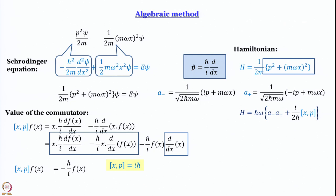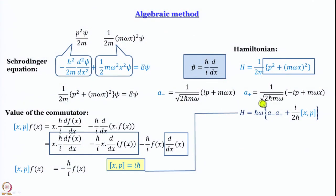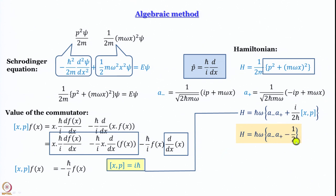Now we take [x, p] = iℏ and plug it into the expression for the Hamiltonian: H = ℏω·(a⁻a⁺) + (i/2ℏ)·[x,p]. Substituting iℏ: i times i = −1, and ℏ in numerator and denominator cancel, leaving −1/2. So the Hamiltonian simply becomes H = ℏω·(a⁻a⁺ − 1/2).